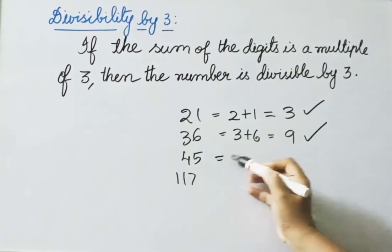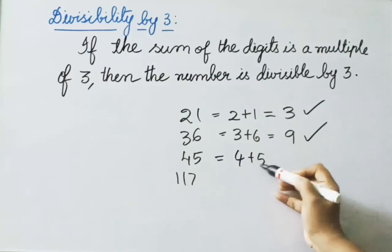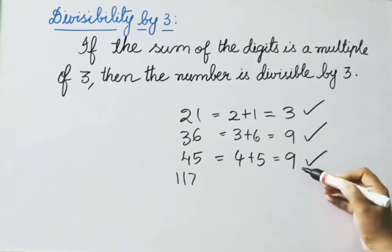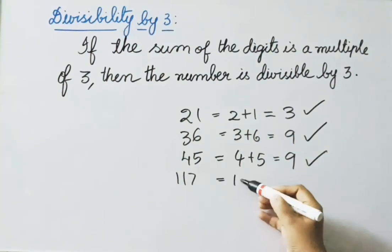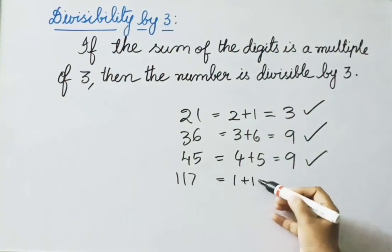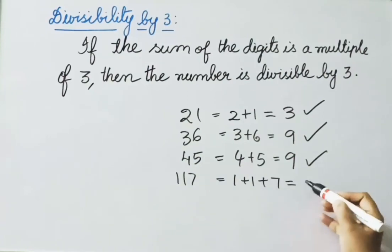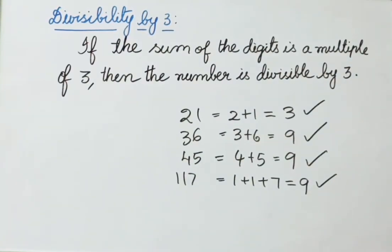Check 45: 4 plus 5 equals 9, which is a multiple of 3, so it is divisible by 3. Check 117: 1 plus 1 plus 7 equals 9, and 9 is a multiple of 3, so 117 is also divisible by 3.